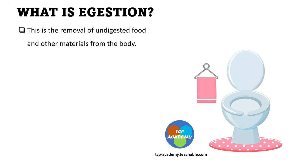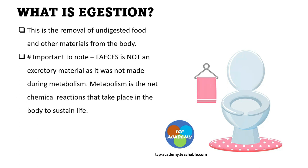Assimilation uses the nutrients from the food as energy. So excretion is very different from ejection. Remember the five-step holozoic process: ingestion, digestion, absorption, assimilation, and then ejection — the removal of feces from the body. It is important to note again that feces is not an excretory matter, as it was not made during metabolism or any of the body's chemical reactions. Metabolism refers to all the chemical reactions that take place in the body.